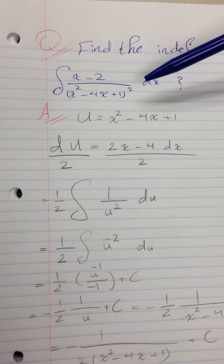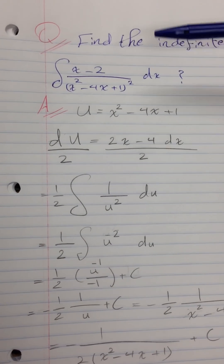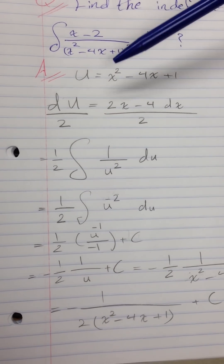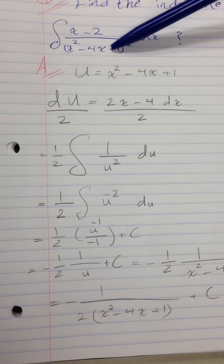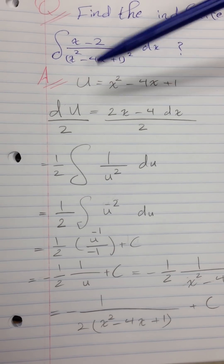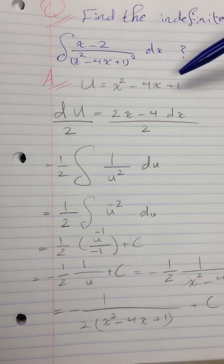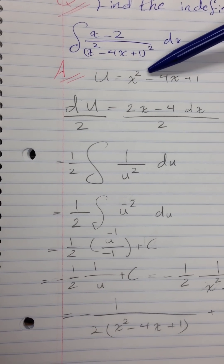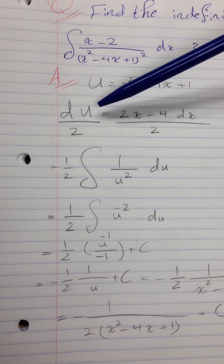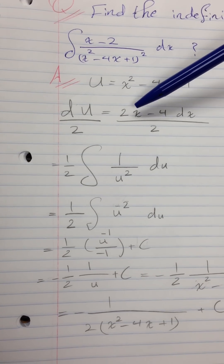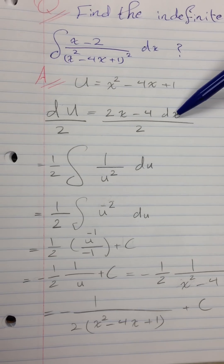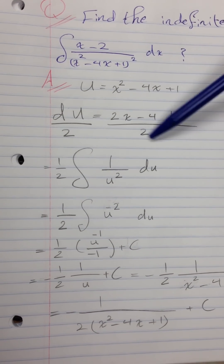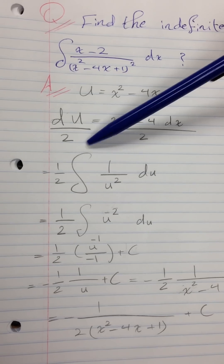First, we look for our u, which equals the inside of the expression: u = x² − 4x + 1. Then we take the derivative: du = (2x − 4)dx, and we divide by 2.